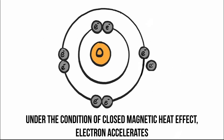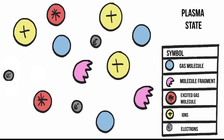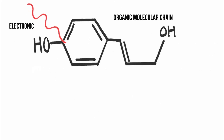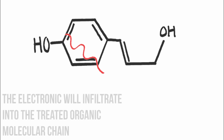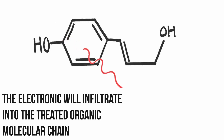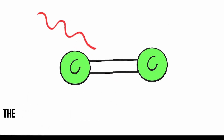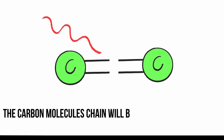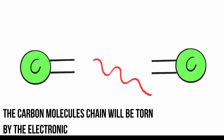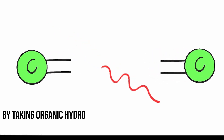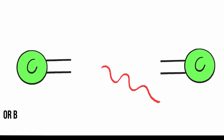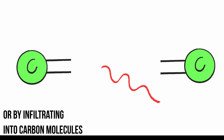Under the condition of a closed magnetic heat effect, electrons accelerate from the separation of atoms and interact with the nucleus, causing the formation of a plasma state. The plasma state oxygen then oxidizes organic matter completely. Pyrolysis then occurs as the electrons infiltrate into the treated organic molecular chain, and the carbon molecule chain is torn by the electrons by taking the organic hydrocarbon structure of hydrogen or by infiltrating into the carbon molecules.